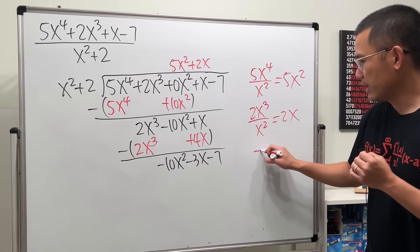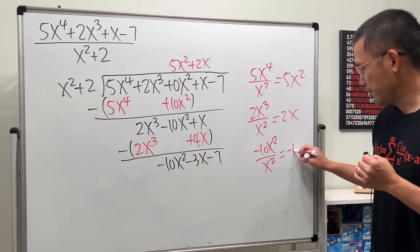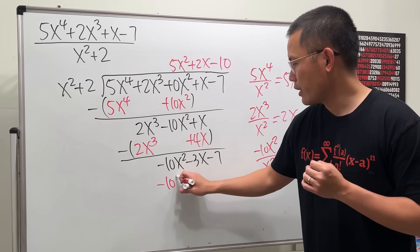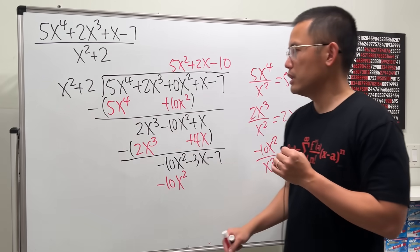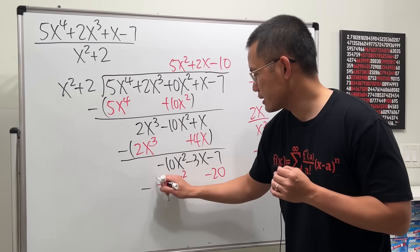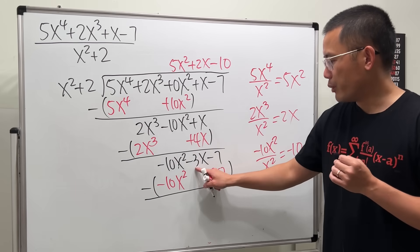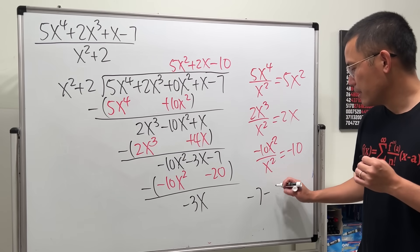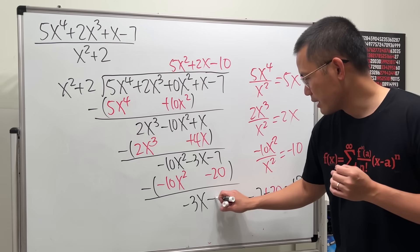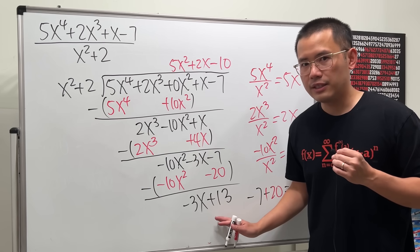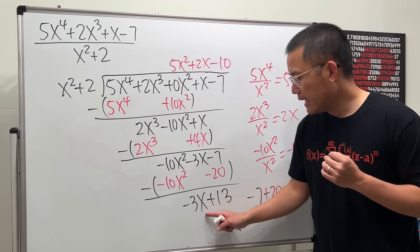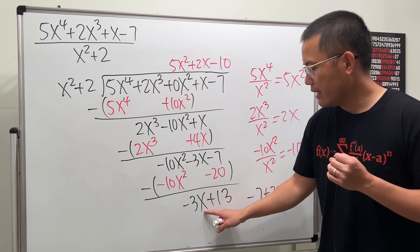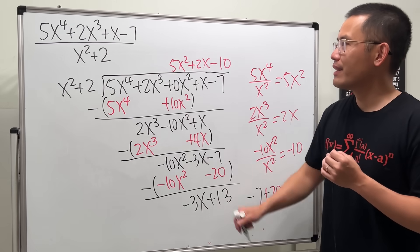Compare: negative 10x² over x² is negative 10, so write minus 10. Negative 10 times x² is negative 10x², and negative 10 times 2 is negative 20. Subtract: negative 10x² cancels. Bring down negative 3x. Then negative 7 minus negative 20 becomes negative 7 + 20 = 13. The remainder is negative 3x + 13, which is degree lower than the denominator's x², so we're done.